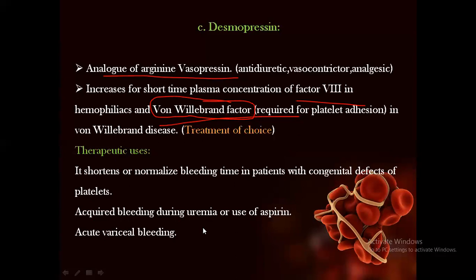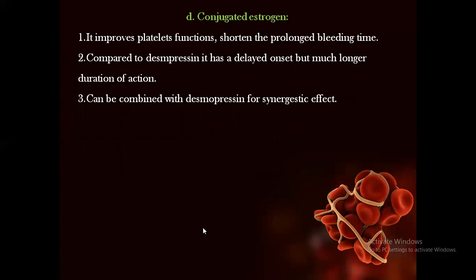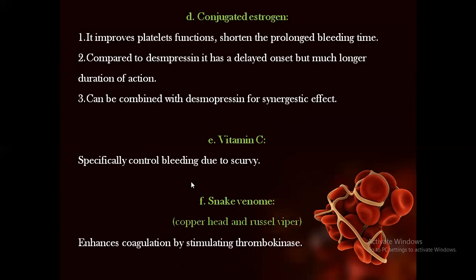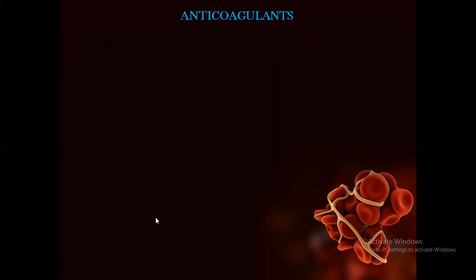Conjugated estrogen is a newer form; it improves platelet functions and shortens the prolonged bleeding time. Compared to desmopressin, it has a delayed onset but much longer duration of action, and can be combined with desmopressin for a synergistic effect. Vitamin C can occasionally be given specifically for controlling bleeding during scurvy. Snake venom of copperhead and Russell's viper can be used, which enhances coagulation by stimulating thrombokinase. Now we will begin with anticoagulants, which work against coagulation factors and block the activity of clotting.